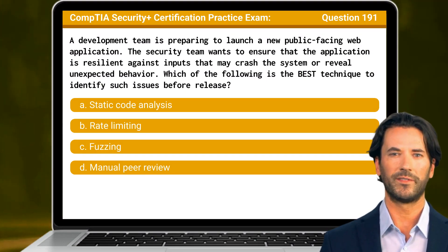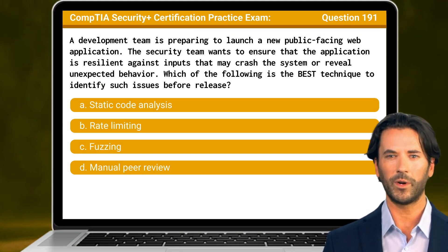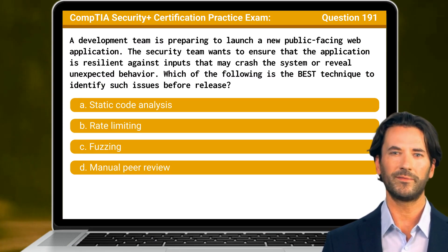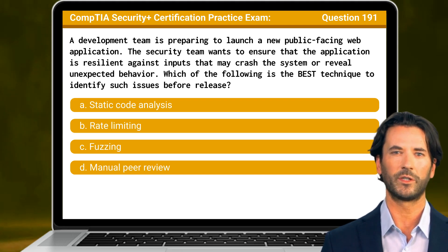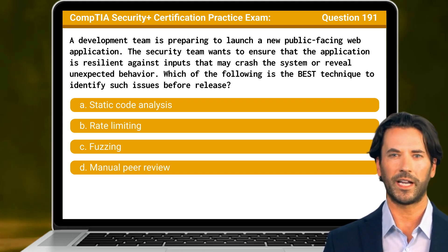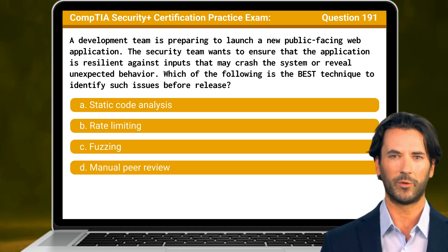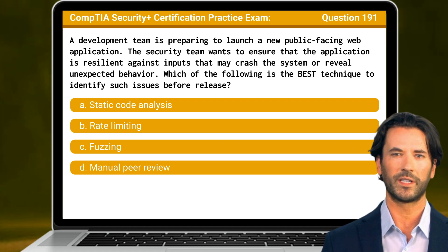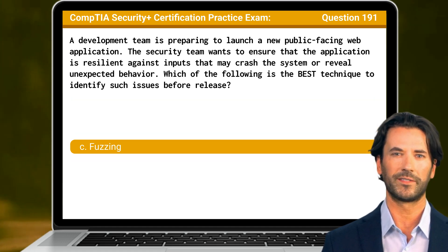Question 191. A development team is preparing to launch a new public-facing web application. The security team wants to ensure that the application is resilient against inputs that may crash the system or reveal unexpected behavior. Which of the following is the best technique to identify such issues before release? The answer is C: Fuzzing.